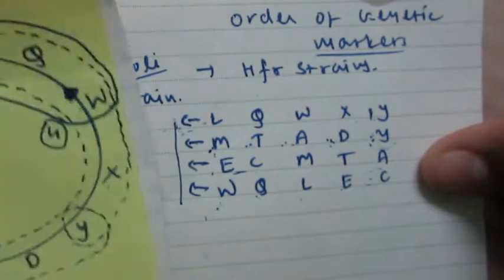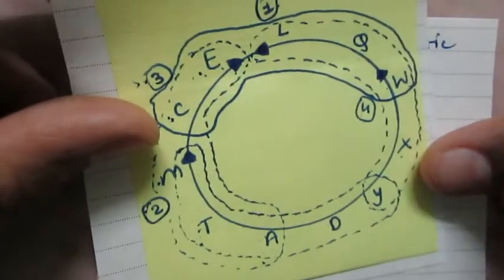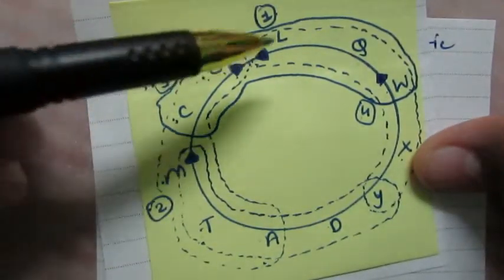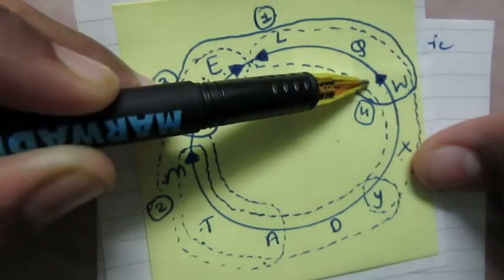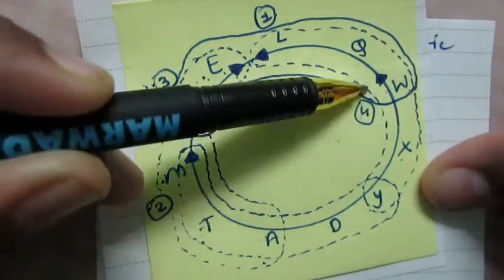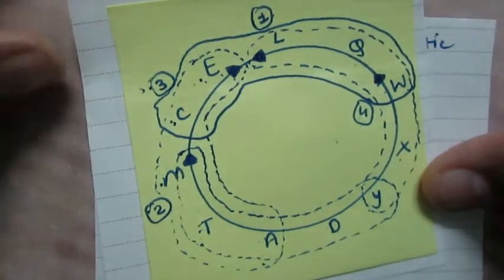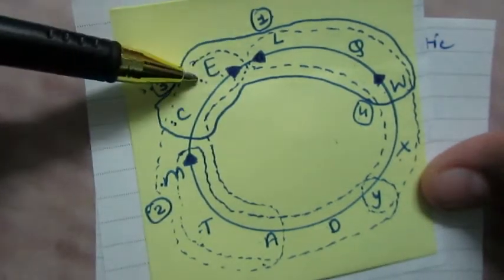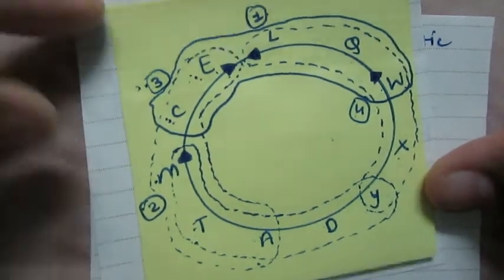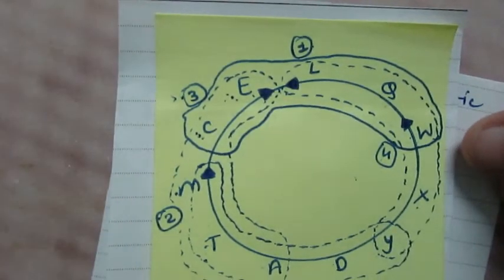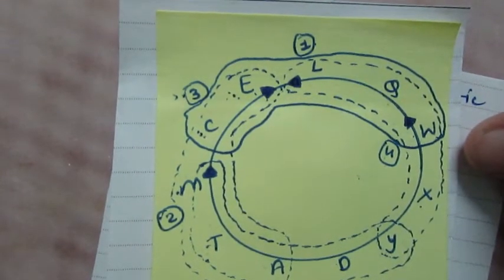In the last strain, M comes first, followed by Q L E and C. In the fourth strain, I put arrow key towards W, followed by Q, L, E and C.